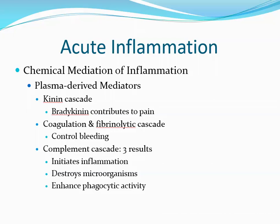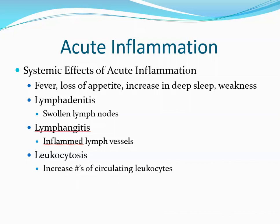All of these chemical mediators are released very rapidly, resulting in an aggressive response to injury, and then their concentration drops suddenly to set the stage for healing. Sometimes there are systemic effects associated with acute inflammation, including fever, loss of appetite, an increase in deep sleep, and weakness. Effects on the lymph vessels include lymphadenitis (swollen lymph nodes), which is a sign that white cells and lymph nodes are doing their job filtering bacteria and causative agents. Lymphangitis is inflamed lymph vessels, and leukocytosis refers to an increase in the number of circulating leukocytes.